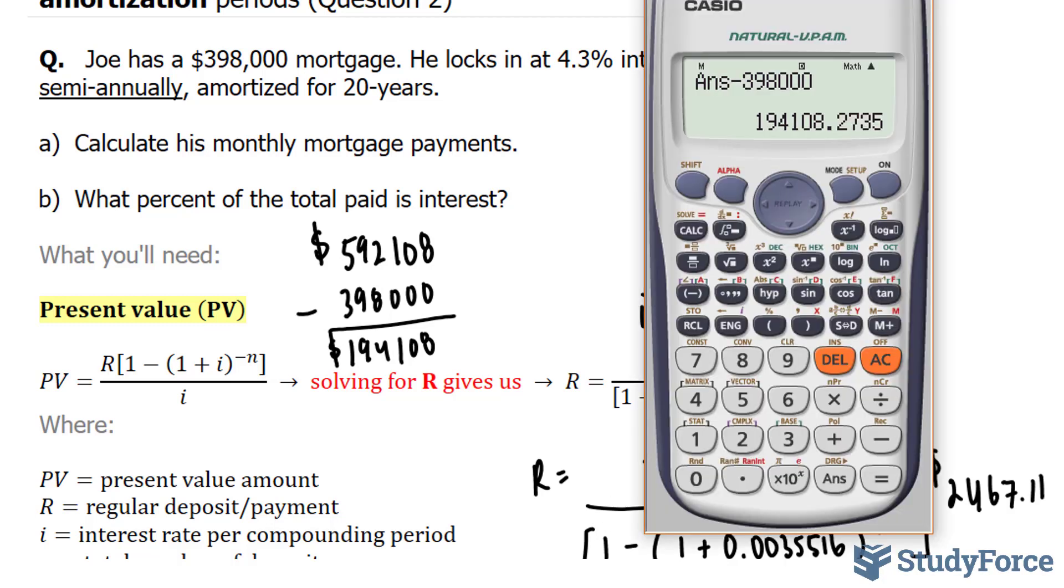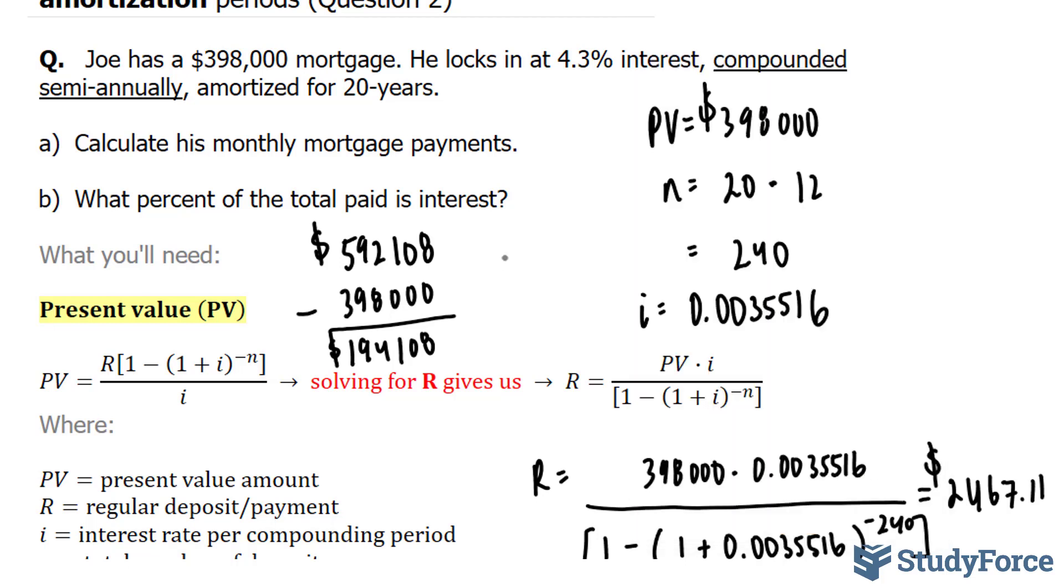Well, we're going to take this number and divide it by 592,108, multiply this by 100 to get the percentage. 32.7% of what he pays will go towards interest.